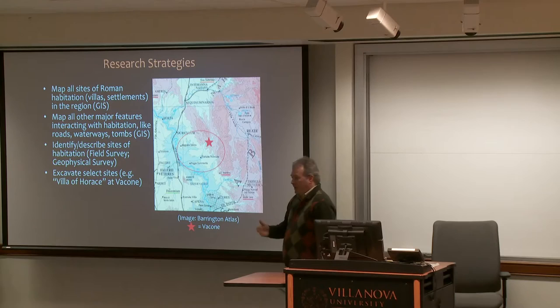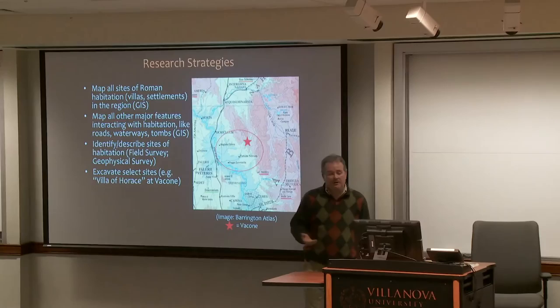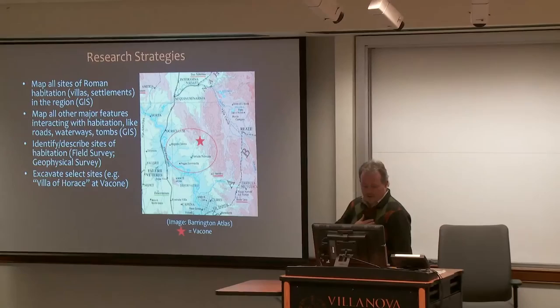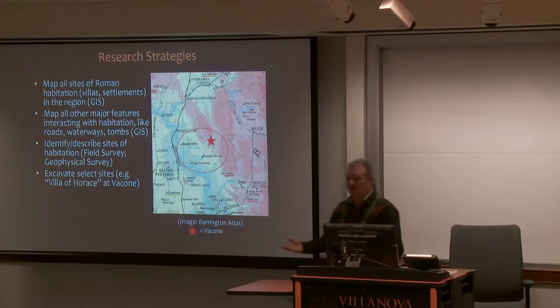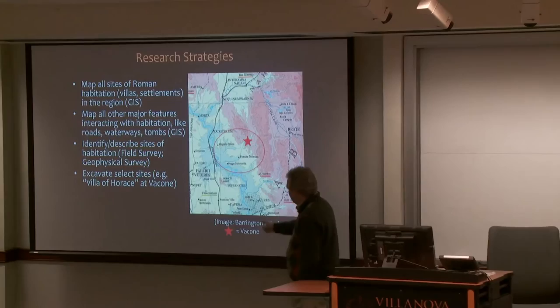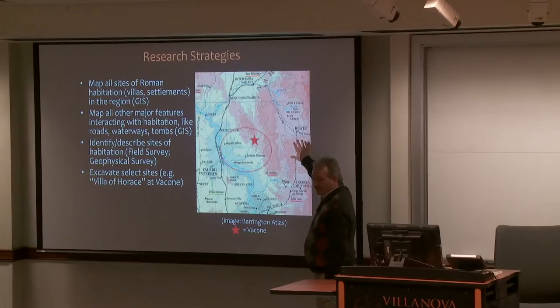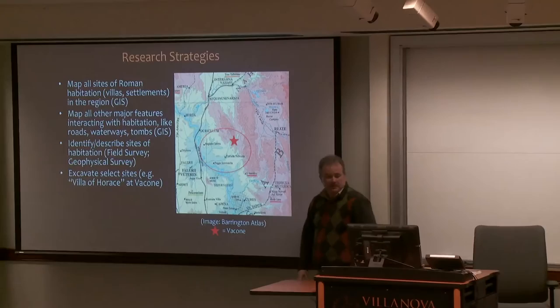We're finding that some of the sub-roads branching off the bigger Roman roads actually have quite a large number of tombs on them, which is not unusual for the ancient world, but it's really helping us map and figure out where things are in the region. Today, though, I'm going to focus on what we do with the field school — excavating at this site called the Villa of Horus at the little town of Bacchone. We've got the Tiber River running here and the Monte Sabini off to the east, so we're in between both of these big landmarks.